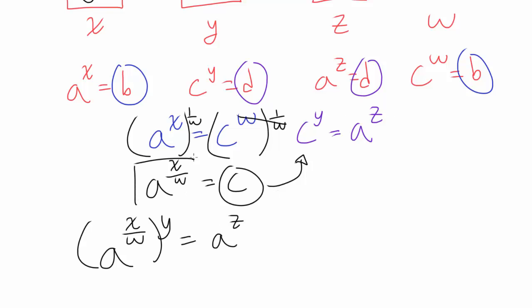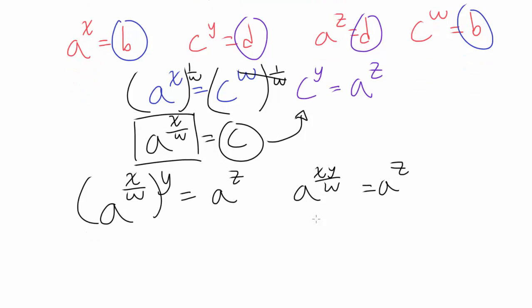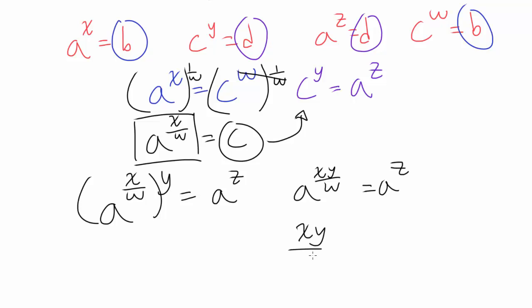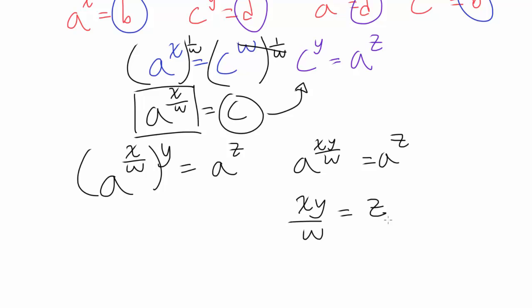All I'm doing is substituting this value, which equals C, into this equation. So you have A to the xy over w equals A to the z, and since the bases are equal, the exponents have to be equal: xy over w equals z, otherwise known as xy equals wz.